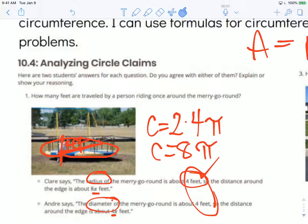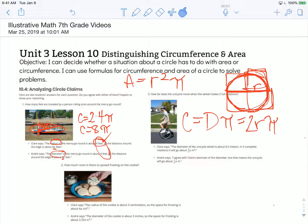You'll want to look at the rest of these and consider similar things in regards to is this area or is this circumference? And if so, whose argument makes the most sense? Again, our objective is I can decide whether a situation about a circle has to do with area or circumference. Make that decision first, and then use the correct formula for finding the circumference or area of the circle to solve the problem.